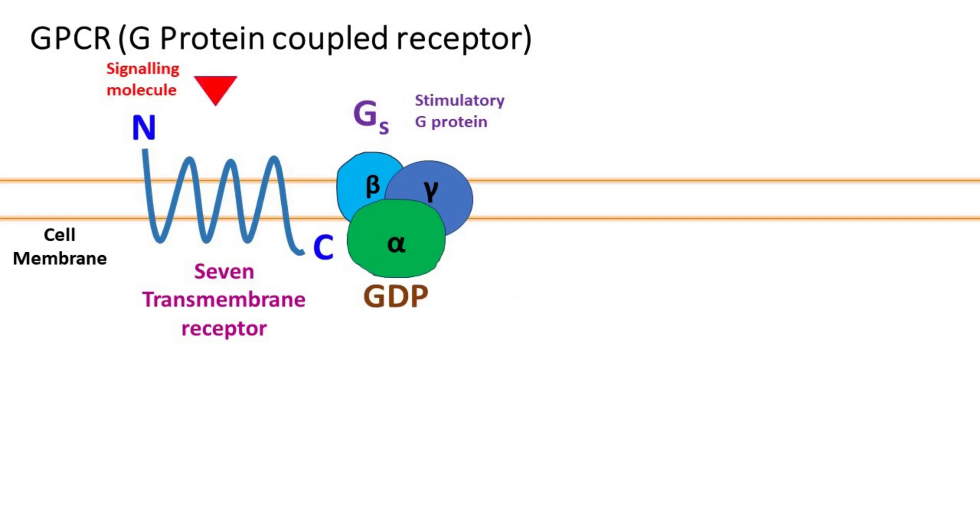When a signaling molecule from the external environment binds the receptor, the GDP attached with the alpha subunit is replaced by GTP. The alpha subunit bound with GTP is the active state of the GS subunit.